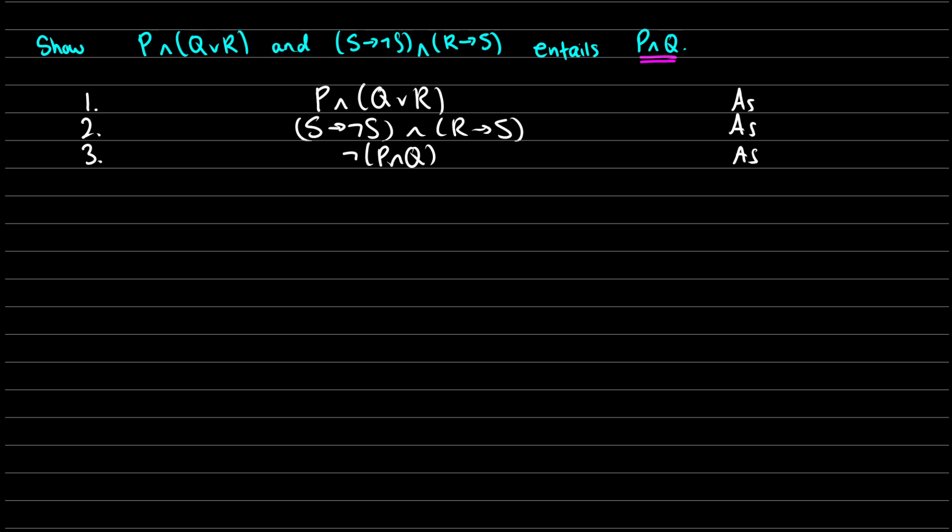So first thing I'm going to do, let's get rid of the and in p and q or r. So if p is true and q or r is true, then we know that p is true. We know q or r is true. So these both come from one. And this is and decomposition. In line two, we have the same thing. We have s arrow not s and r arrow s. So let's do the same thing. Let's do and decomposition on that. So that way we can get s arrow not s and we get r arrow s. So this comes from two. And this is and decomposition once again.